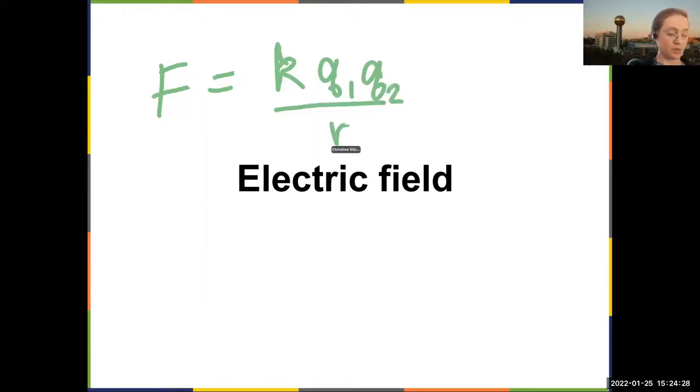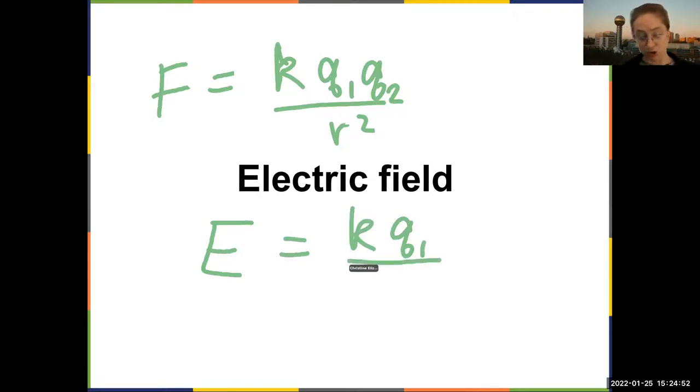But now we want to talk about the environment seen by a generic object. What does it see before we've decided how large the charge is and its sign? So we use the electric field, which is the Coulomb constant times the charge of Q1 divided by the distance from the point to Q1. So it's like dividing by Q2.